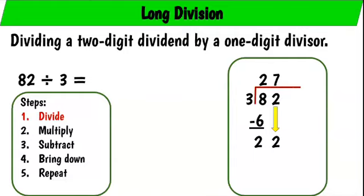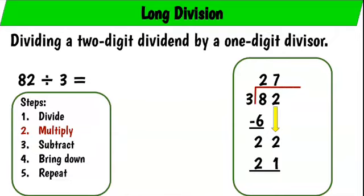The next step will be for us to multiply. So we're multiplying that 7 by 3. That will give us 21.